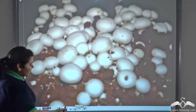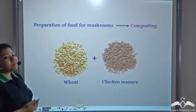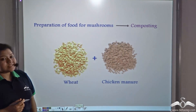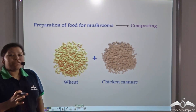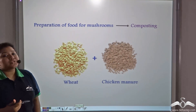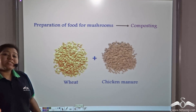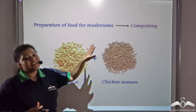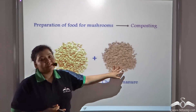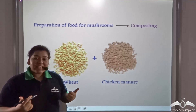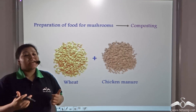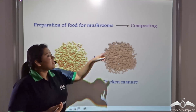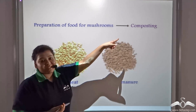Let us find out how button mushrooms are cultivated. Firstly, food for the mushrooms is prepared — a nutritious mixture of wheat and chicken manure. This process of preparing food for the mushroom is known as composting.